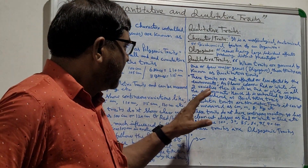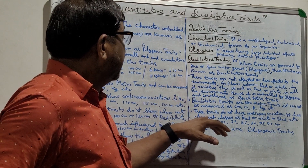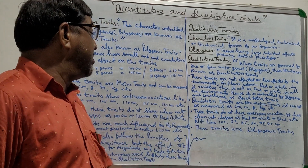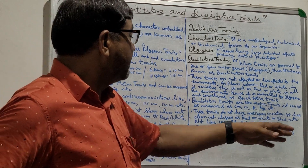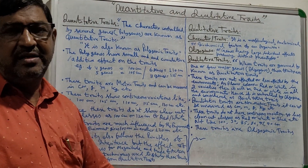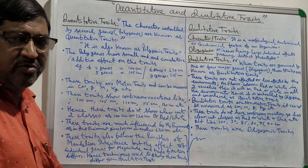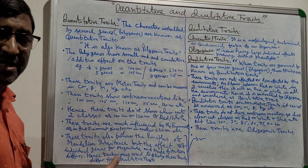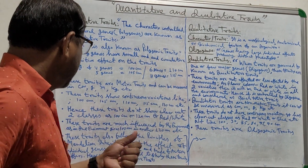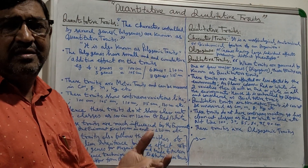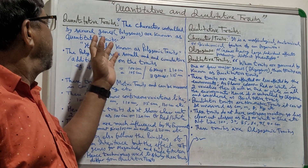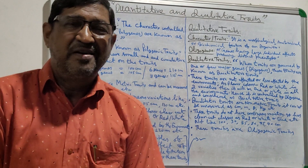These traits do not have continuous variation. As I said, they have clear-cut classes — red or white or blue — not like 100, 90, 85, 80, 75, 77 cm. These traits are oligogenic in nature. Of course, for inheritance they also follow Mendelian principles, but for knowing the magnitude and mode of action it differs from quantitative traits. So you study these traits in different ways than you study quantitative traits.